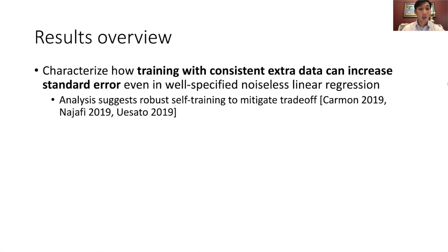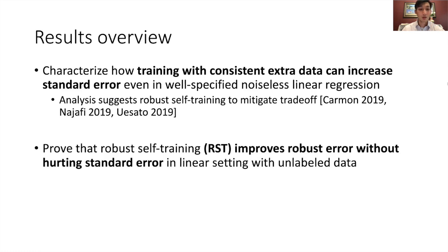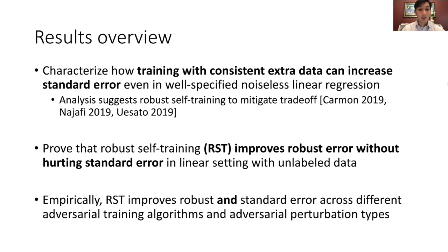As an overview, we characterize how training with consistent extra data can increase standard error, even in well-specified noiseless linear regression. Our analysis suggests that the recent robust self-training algorithm can mitigate this trade-off. We prove that robust self-training improves the robust error without hurting the standard error, therefore eliminating the trade-off in the linear setting using unlabeled data. Empirically, RST improves both robust and standard error across different adversarial training algorithms and perturbation types.